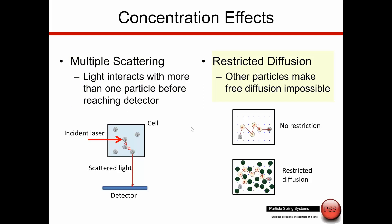The second effect is restricted diffusion. The principle of DLS is that particles move due to Brownian motion, and the algorithm models the translational diffusion coefficient from that motion. At lower concentrations, particles are free to diffuse without restriction. But in very high concentration systems, particles interact with neighboring particles and are not free to diffuse as freely, which slows them down, changes the diffusion coefficient, and therefore changes the calculated result.